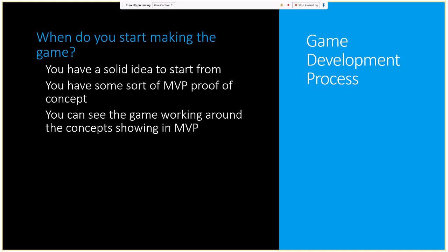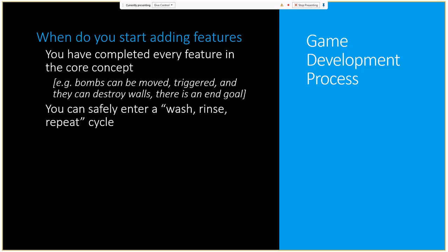When do you start adding features? You need a completed feature from the core concept before finishing any new ones. When you add a bomb, first it needs to be moveable, then when it lands on a trigger pad it starts exploding, then it destroys walls — simple mechanics that together make up what a bomb is. This lets you safely enter a wash-rinse-repeat cycle: add something simple, test it, change it, and repeat for everything you want to add.